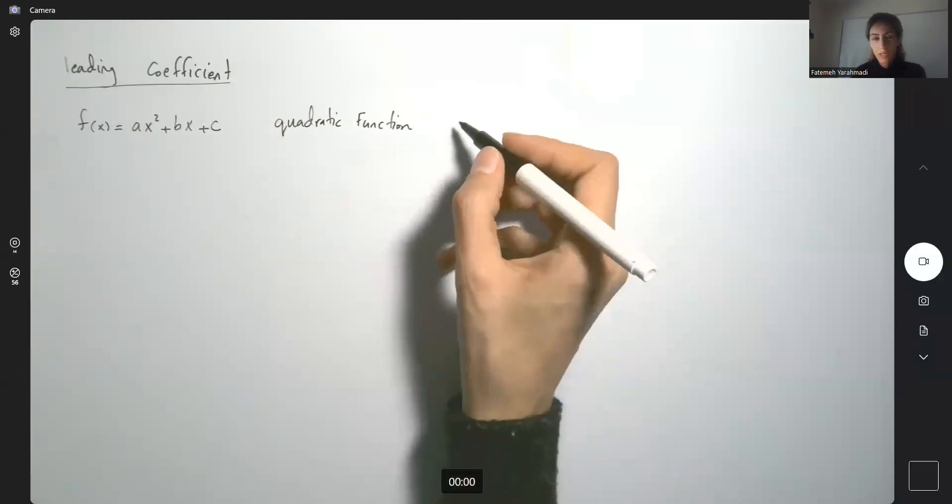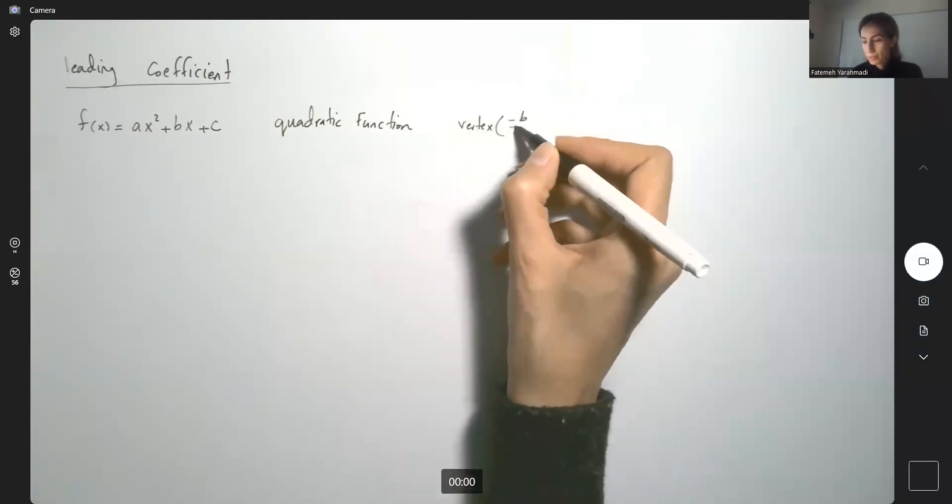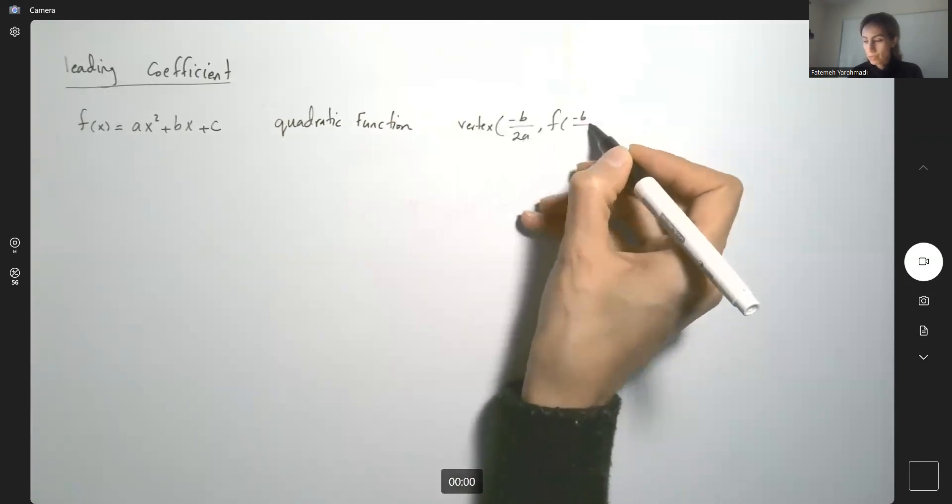We talked about this before. It has a vertex at negative b over 2a and f of negative b over 2a.